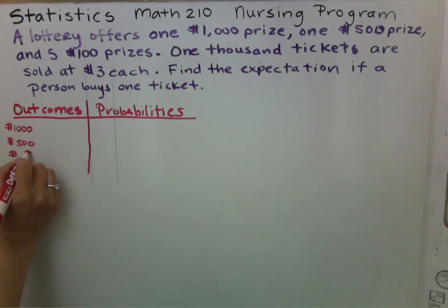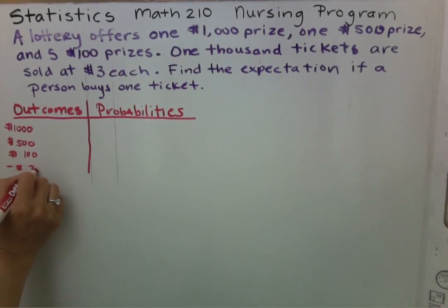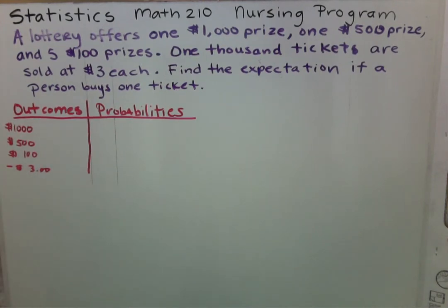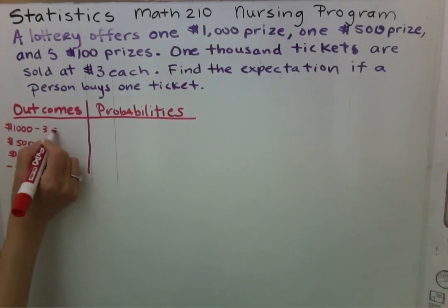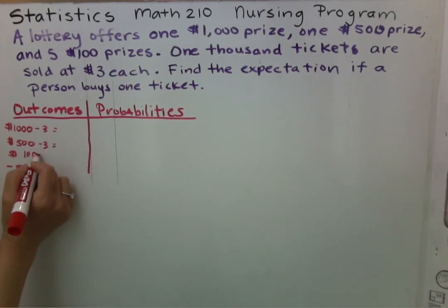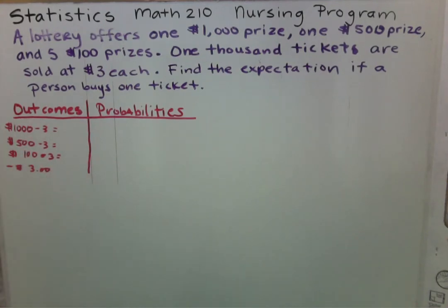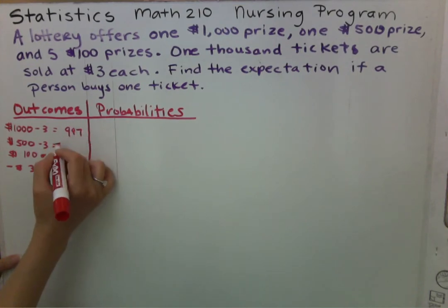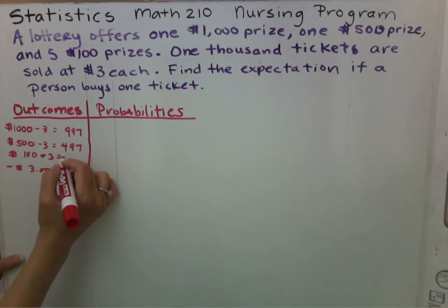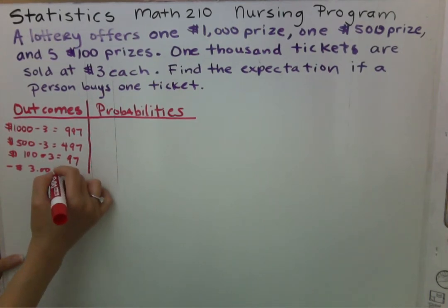The outcomes also include winning a $100 ticket and losing three dollars for buying the ticket. If we were to win a thousand dollars, we would also have to subtract three dollars for buying the ticket. We subtract three dollars from five hundred and three dollars from a hundred as well, because that's the cost to buy a ticket. Make sure you understand why we're subtracting three dollars — it cost us three dollars to buy the ticket to even have the chance of winning.